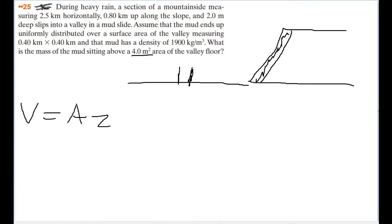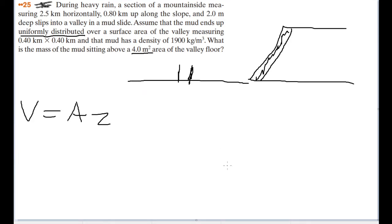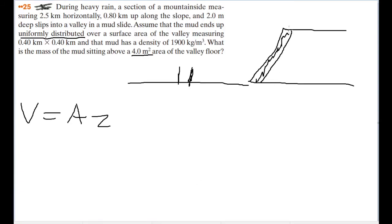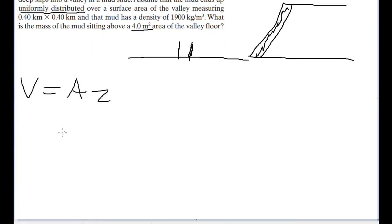This is why it's important that the question is careful to specify that the mud is being uniformly distributed over the area. That allows us to make an idealization that the entire valley now has the same thickness of mud all throughout. So what we can do is take the volume of all the mud that fell down and use that to figure out what the thickness is going to be. If the thickness z is going to be equal to the total volume divided by the area, then let's figure out what that volume is.